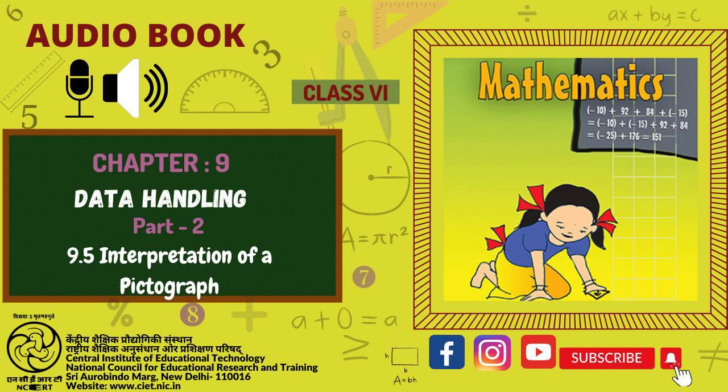Question 5: The number of girl students in each class of a co-educational middle school is depicted by the pictograph. Column 1 Classes, Column 2 Number of Girl Students. The depiction is done by a picture where each picture represents 4 girls. Class 1: 6, Class 2: 4 and half, Class 3: 5, Class 4: 3 and half, Class 5: 2 and half, Class 6: 4, Class 7: 3, Class 8: 1 and half.